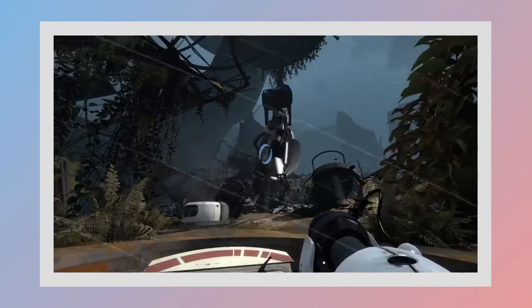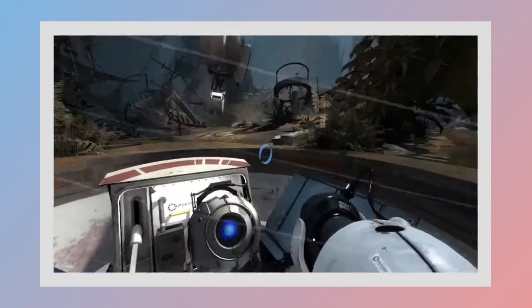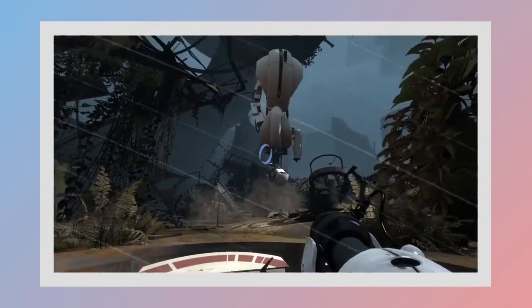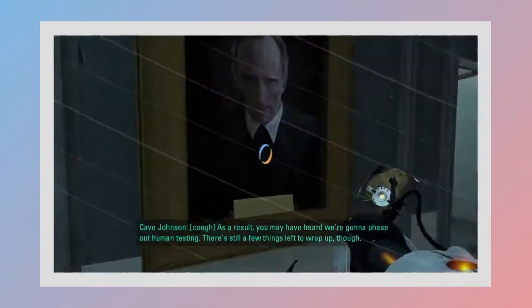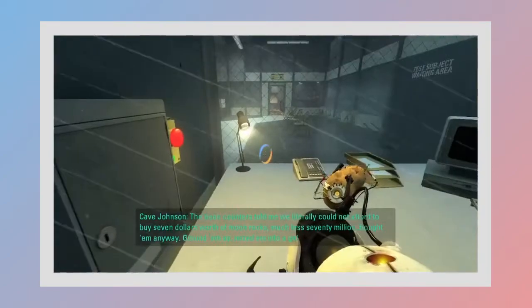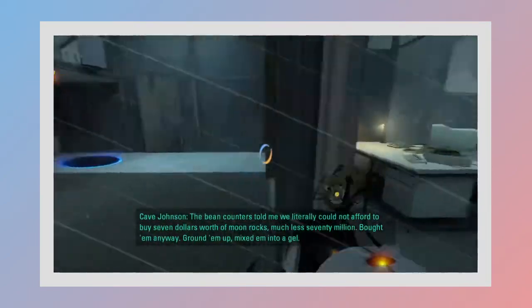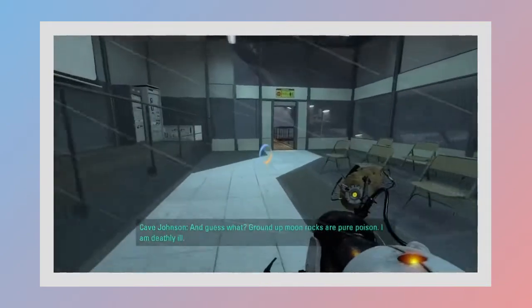There is actually very little that we know for sure about Aperture and its development of the genetic life-form and disk operating system, a.k.a. the GLaDOS project. But what we do know for sure is that the system was meant to hold the mind of Aperture's founder, Cave Johnson, before chronic moon rock poisoning led to his untimely death. But before that happened, he decreed that if he died before the completion of the program that his assistant Caroline should be forced to take his place.